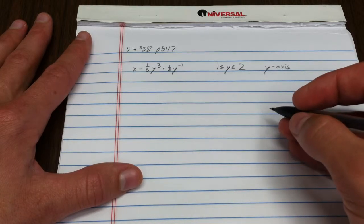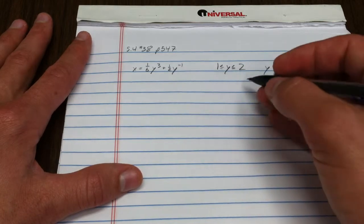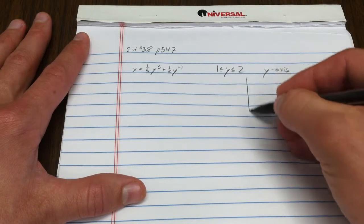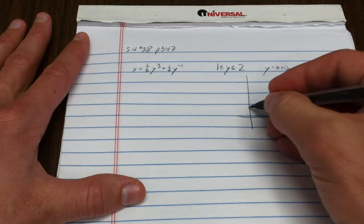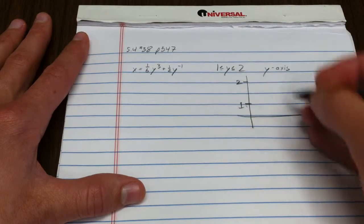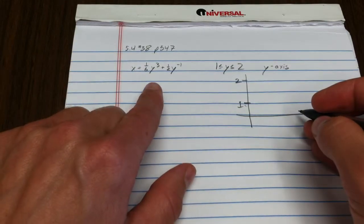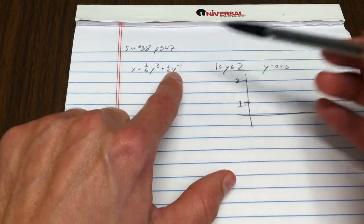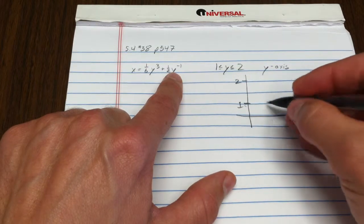Let's see, what does that picture look like? That picture looks something like this. I'm going from y equals one to two. When y equals one, that's a sixth plus a half, so that's maybe four-sixths or two-thirds.